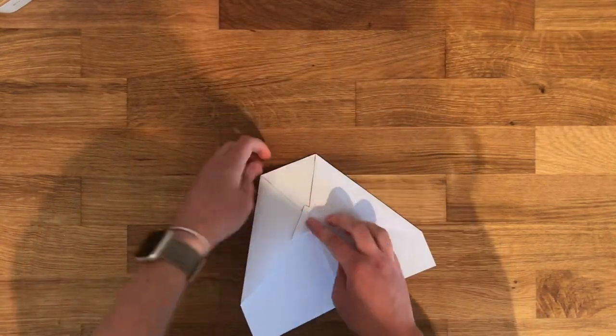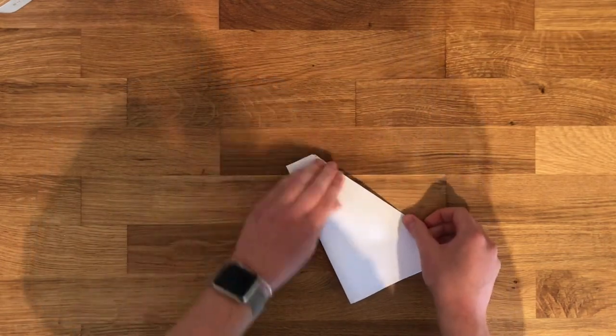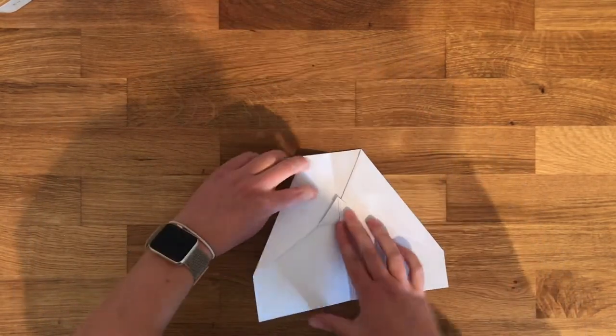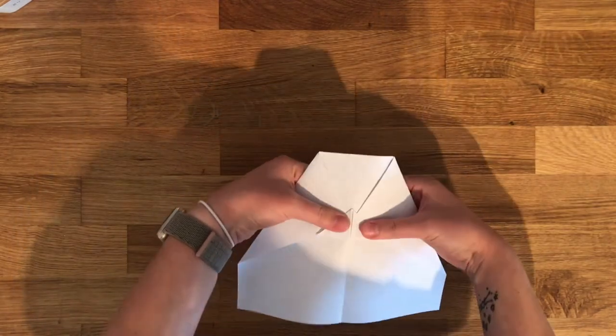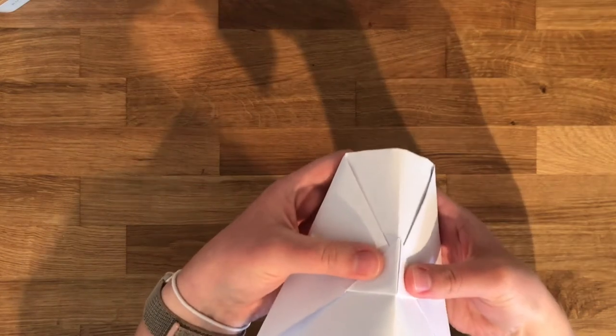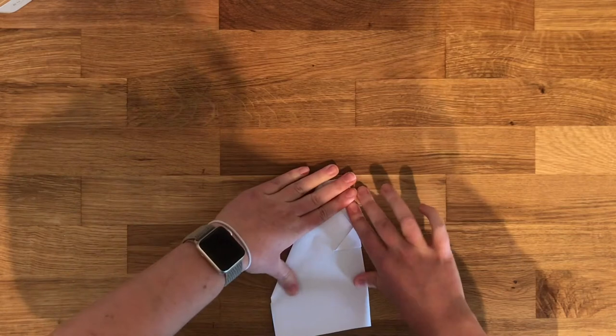Now you're going to fold the whole thing in half. But the fold, instead of going like this with it in, you're going to do it the other way. So the folds are on the outside and you're going to press it down.